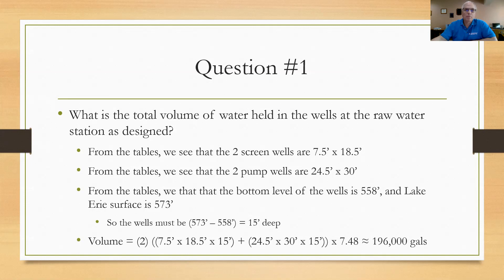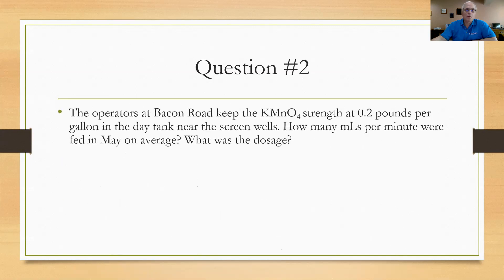So with that, let's go to question number two. Question number two says the operators at Bacon Road keep the permanganate strength at 0.2 pounds per gallon in the day tank. So in other words, when they go fill the day tank up every night they put X amount of gallons in it and put X times 0.2 pounds of chemical in it to bring it up to level. How many milliliters per minute were fed in May on average? And then what was the dosage based on that feed rate? Well, there's two questions here we want to look at. So we need to go into the tables and find out some information here.